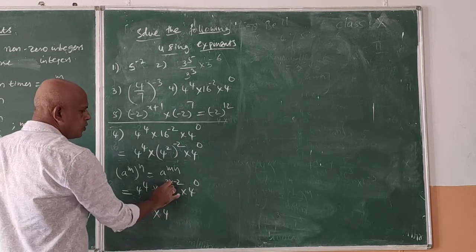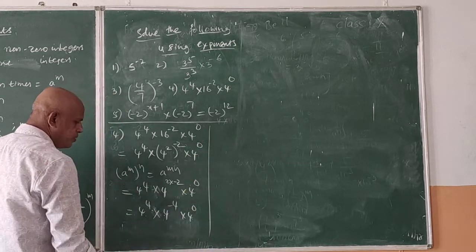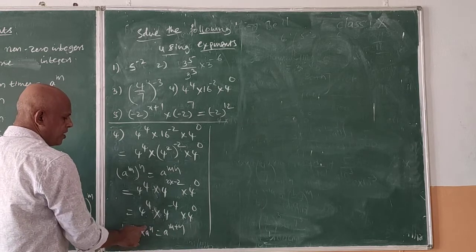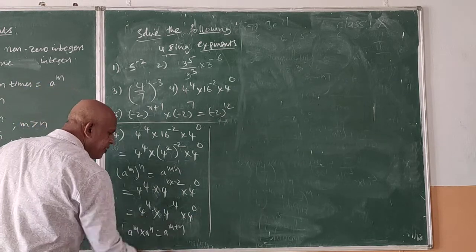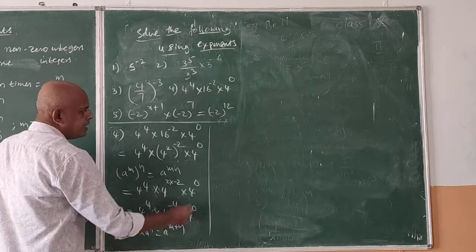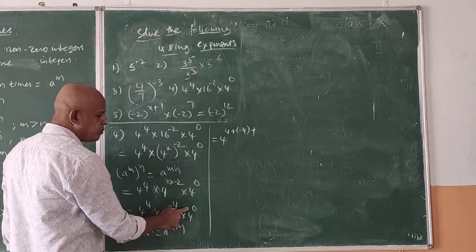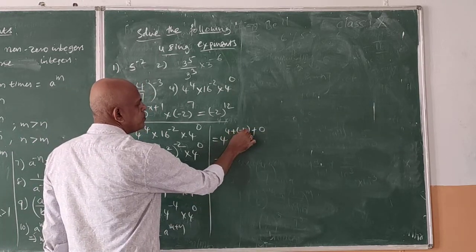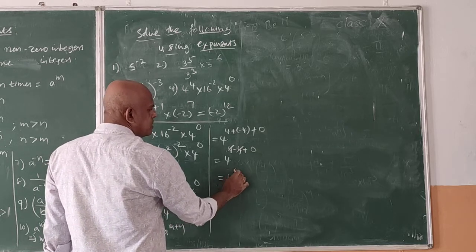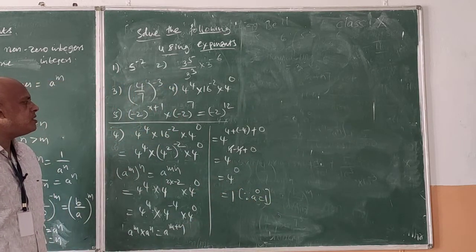So we have 4 to the power of 4, into 4 to the power of minus 4, into 4 to the power of 0. Since the bases are the same, we apply a^m × a^n = a^(m+n) and add the powers: 4 plus minus 4 plus 0 equals 0. That gives 4 to the power of 0, which equals 1, since a to the power of 0 is equal to 1.